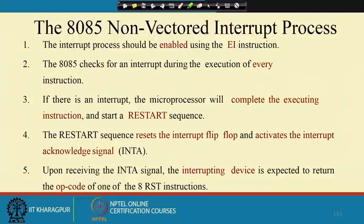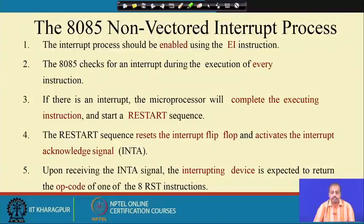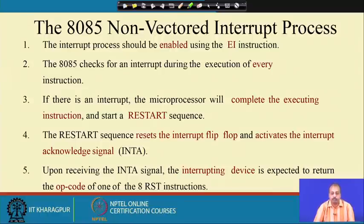The non-vectored interrupt process works as follows: first, the processor should be enabled using the enable interrupt instruction (EI). If this EI instruction is not executed by the processor, it will not be able to receive any interrupts. When the processor is reset, all interrupts are enabled, but they may be disabled through the DI instruction. So the first thing to ensure is that interrupts are enabled using the EI instruction.